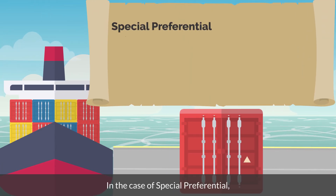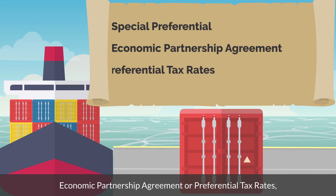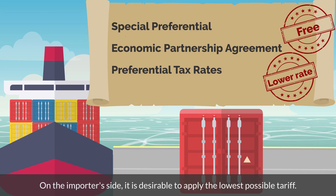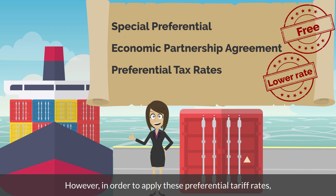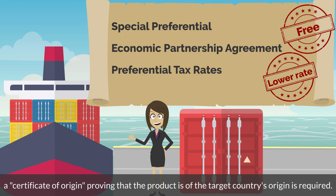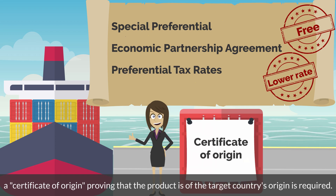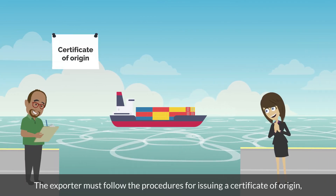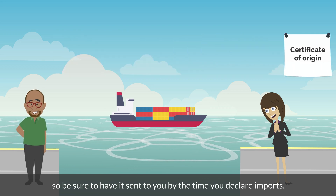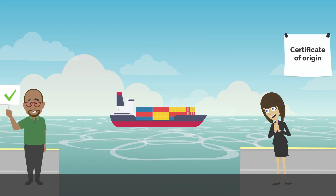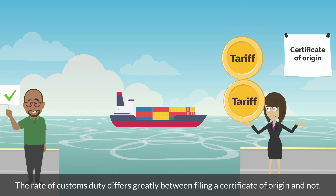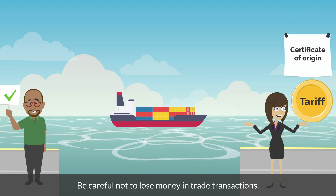In the case of special preferential, Economic Partnership Agreement, or preferential tax rates, free or a rate lower than the general rate is applied. On the importer's side, it is desirable to apply the lowest possible tariff. However, in order to apply these preferential tariff rates, a certificate of origin proving that the product is of the target country's origin is required. The exporter must follow the procedures for issuing a certificate of origin, so be sure to have it sent to you by the time you declare imports. The rate of customs duty differs greatly between filing a certificate of origin and not, so be careful not to lose money in trade transactions.